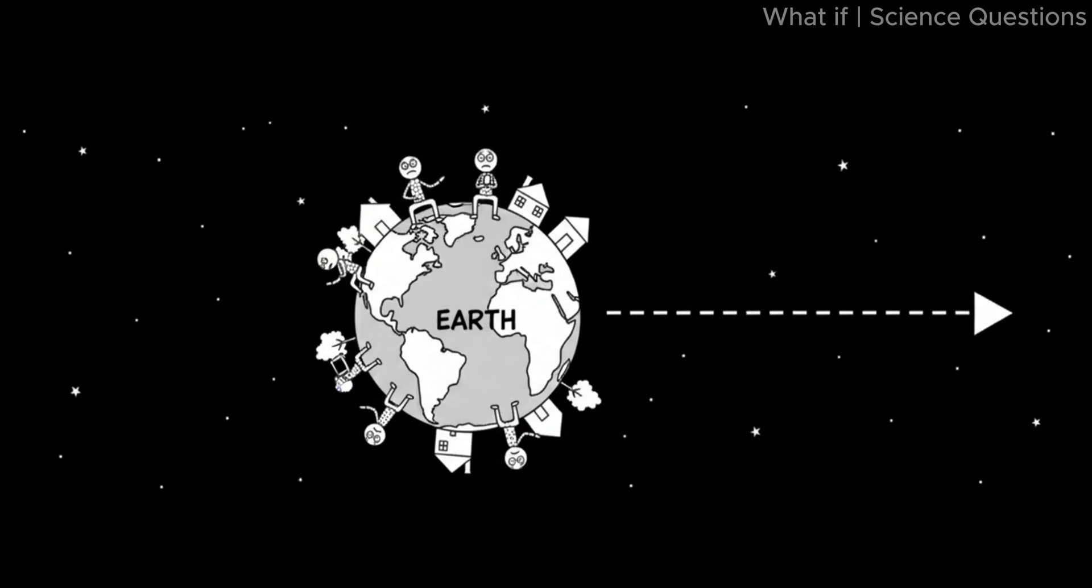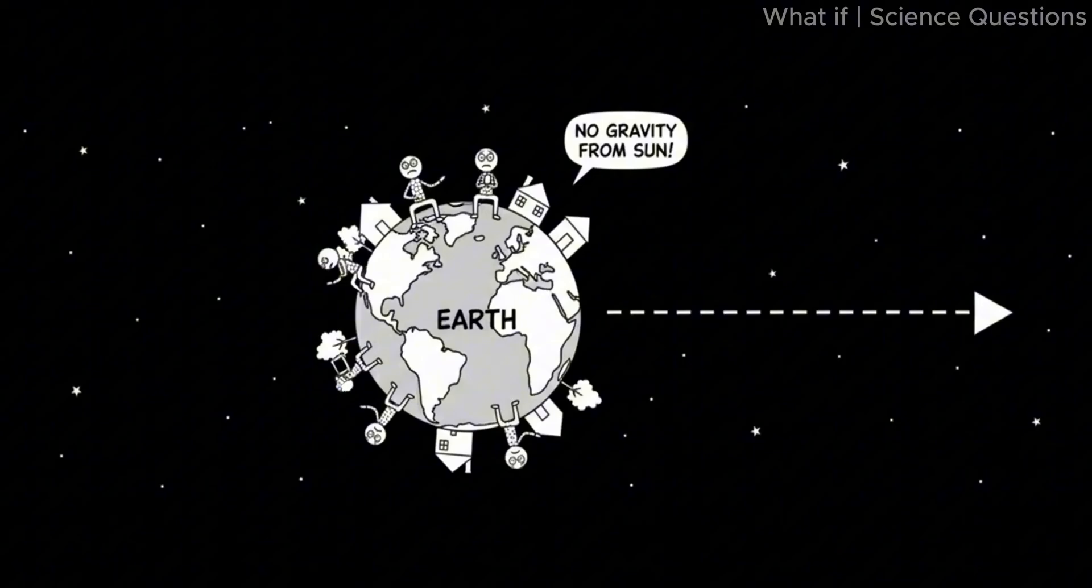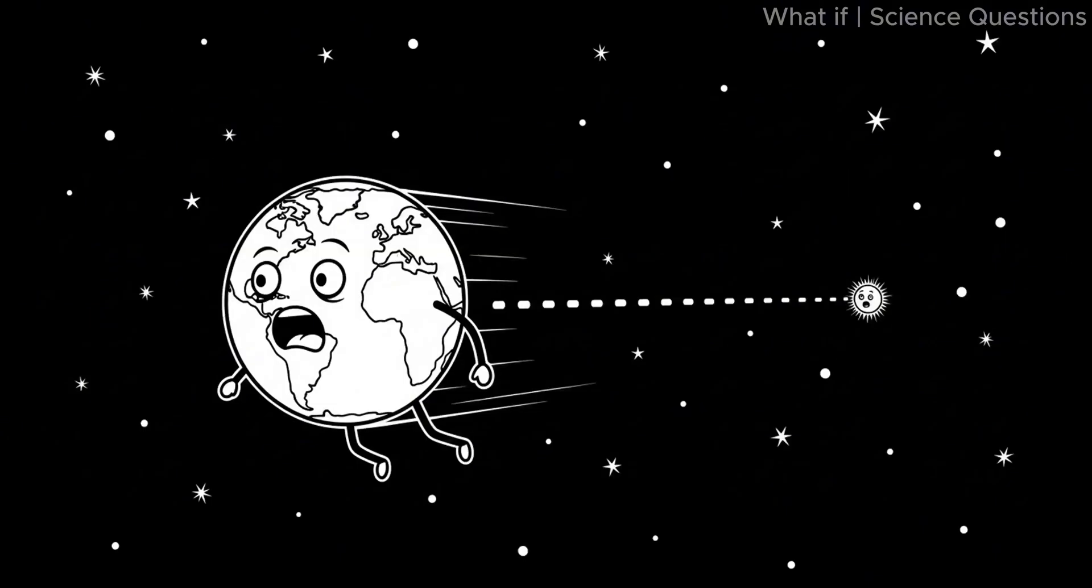The orbit disaster. Without the sun's gravitational pull, earth no longer circles around a star. Instead, it shoots off in a straight line into the freezing emptiness of space.